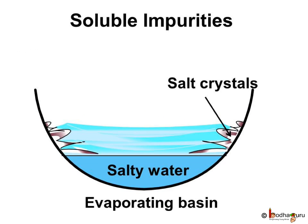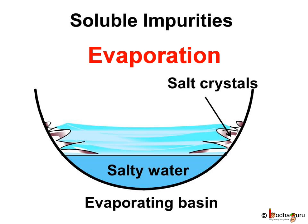How do we remove soluble impurities? Soluble impurities like salt cannot be removed by methods like sedimentation or filtration, as they get dissolved in the water. Let us see a method to remove soluble impurities. In this process, we boil the water. The water evaporates to become water vapor, and the salt is left behind. This process of changing water into water vapor is called evaporation.